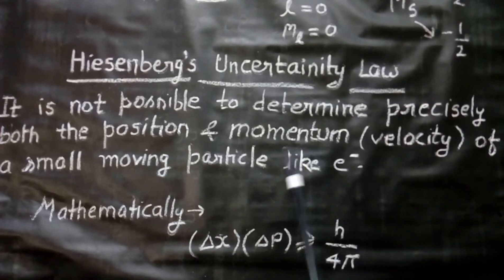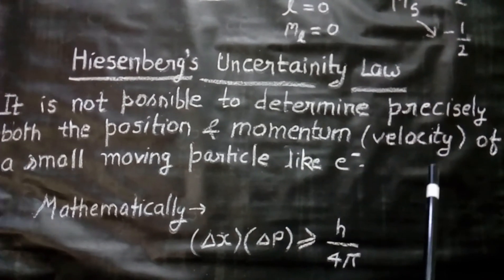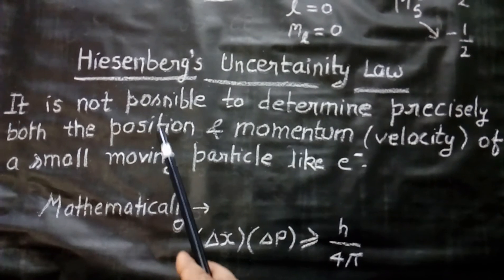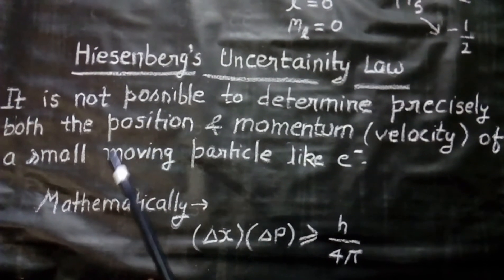Or, if we determine momentum or velocity precisely, there must be a difference in the position or uncertainty in the position.